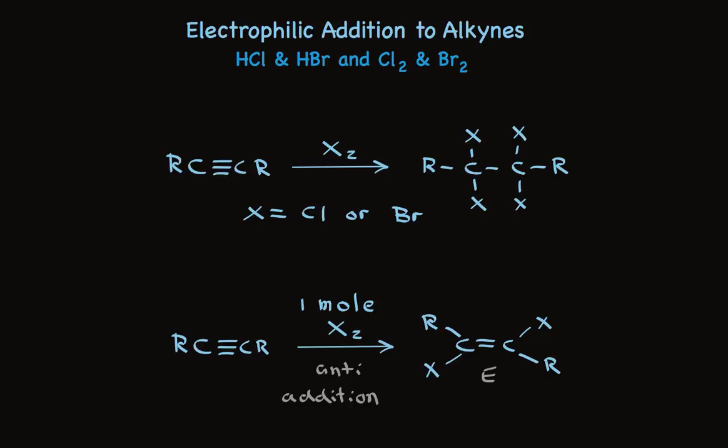When you restrict the amount of halogen used to one mole equivalent, it's often possible to isolate the di-vinyl bromide or chloride. Like the addition of halogen to alkenes, this addition proceeds with anti-addition, so the product has the E-stereochemistry.